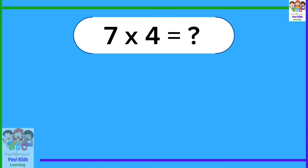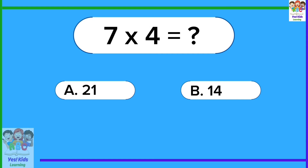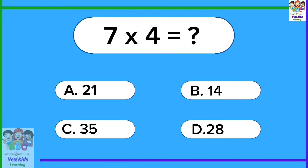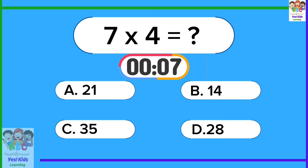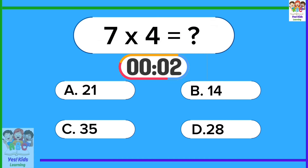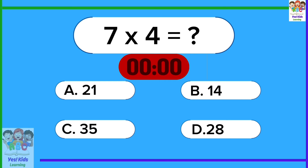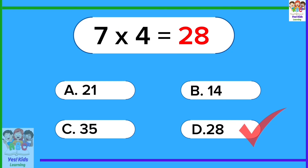7 times 4 equals? 28. 7 times 4 equals 28.